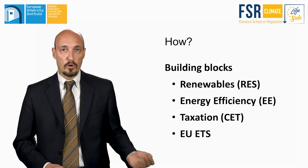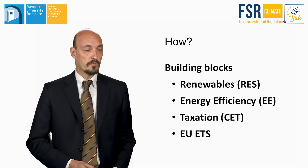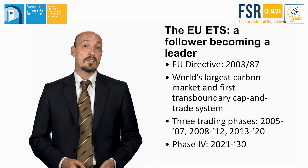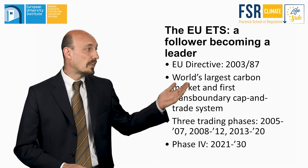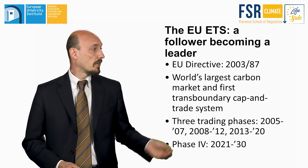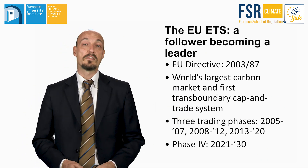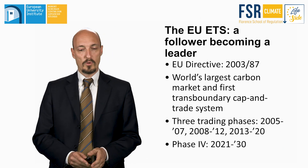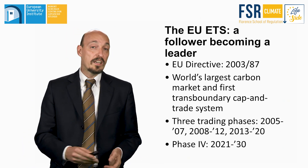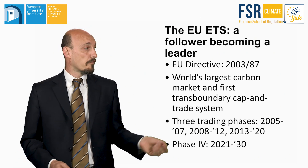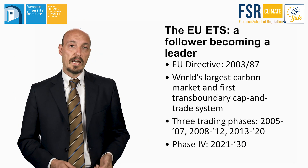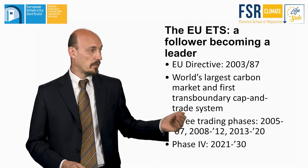It is a story of a follower becoming a leader. In fact, in a few years the EU ETS became the world's largest carbon market and the first trans-boundary cap-and-trade system. The system was divided into three phases of increasing length: 2005–2007, the so-called learning phase; phase 2 up to 2012; and the current phase 3 through 2020.